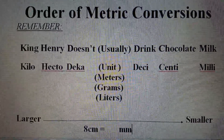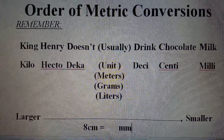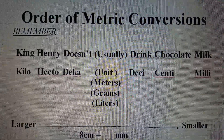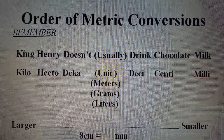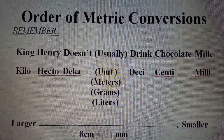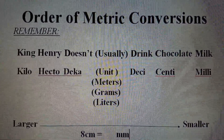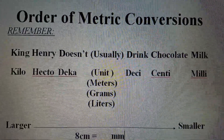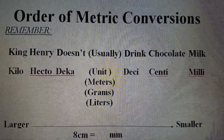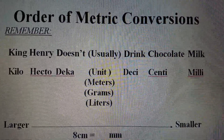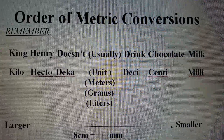Sometimes it can be confusing to know which operation. This acronym in front of you will help you to remember how to convert one unit to another. The acronym reads: King Henry doesn't usually drink chocolate milk.